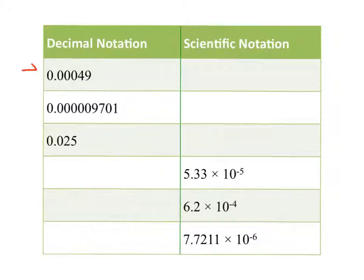For the number in the first row, I'll need to move the decimal place 1, 2, 3, 4 hops in order to get a number between 1 and 10. And so my answer in scientific notation will be 4.9 times 10 to the negative 4.